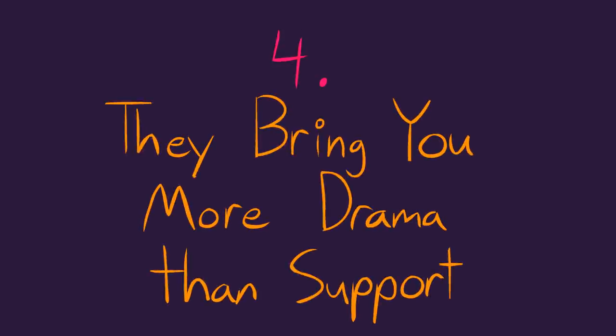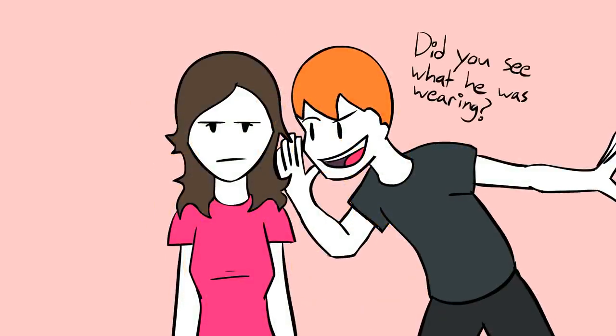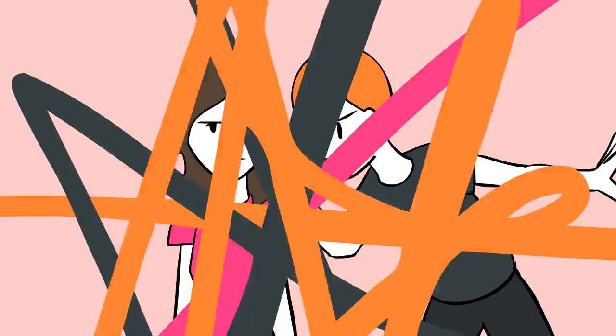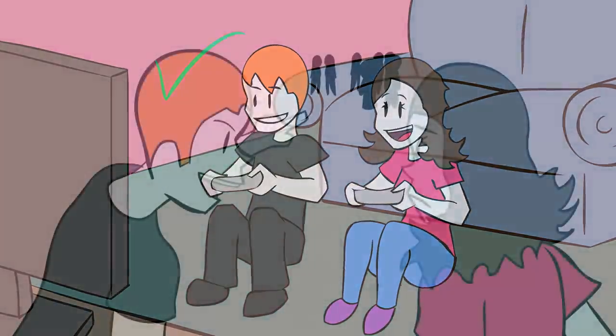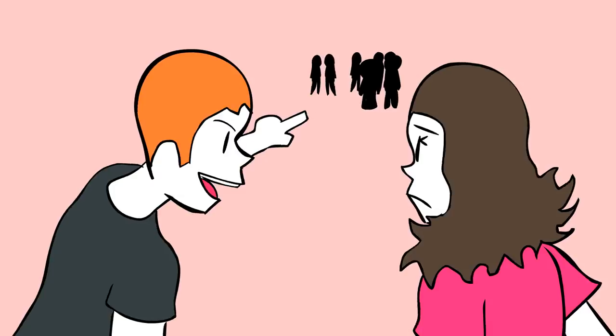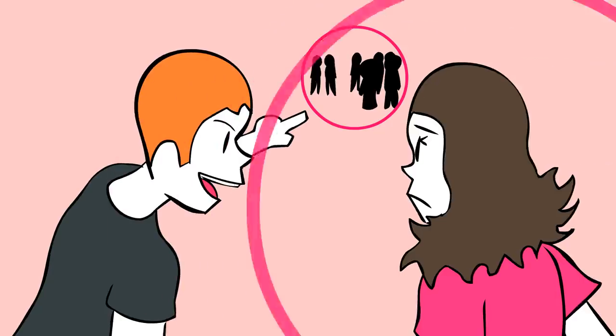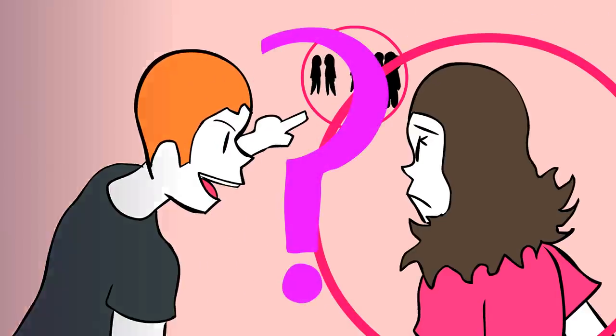Four, they bring you more drama than support. If you have low tolerance for drama, it's probably best to evaluate if you can see yourself growing with someone who enjoys gossiping and stirring up trouble. A solid friendship is about having fun with someone and providing a safe space where both parties can confide in one another. If they smack talk about your other friends and their friends, you can probably guess that they will talk smack about you too. Is that someone worth keeping around?